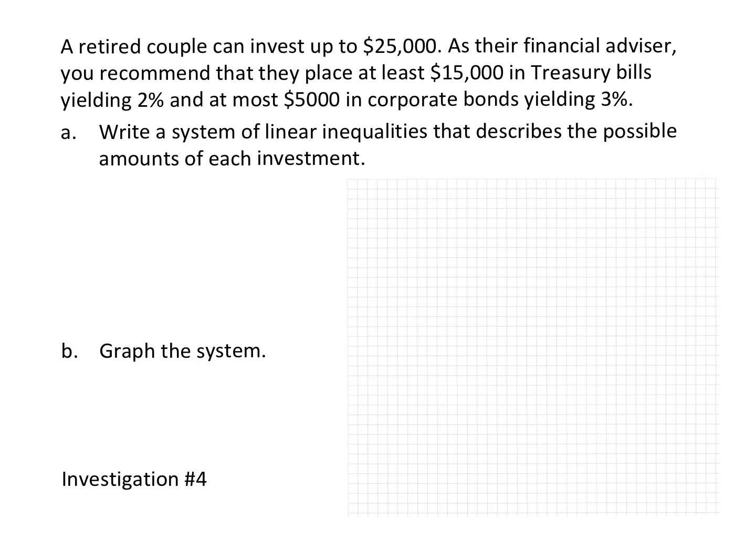In this problem, we have a retired couple that can invest up to $25,000. As their financial advisor, you recommend that they place at least $15,000 in treasury bills, which will yield 2% interest, and at most $5,000 in corporate bonds, which will yield 3% interest. We're going to write a system of linear inequalities that describes the possible amounts of each investment and then graph the system of inequalities.